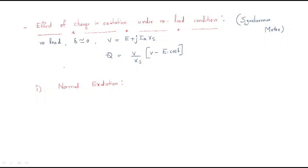First we will discuss normal excitation — that means it will not have more excitation or less excitation, just normal excitation. In this case, E·cos δ equals V. Under no-load condition with delta equal to zero, E·cos 0 equals V, so E and V are both the same magnitude.